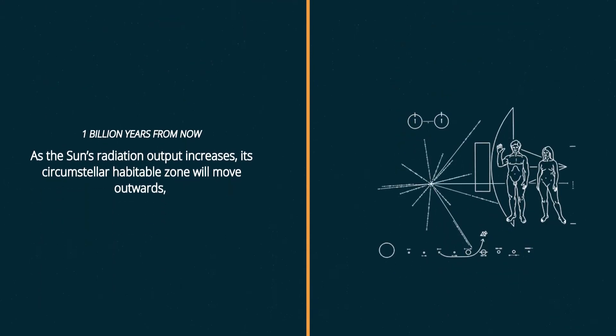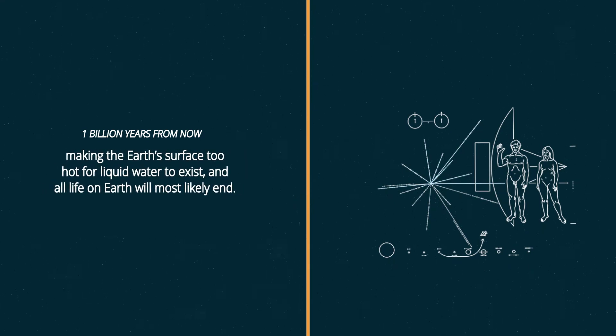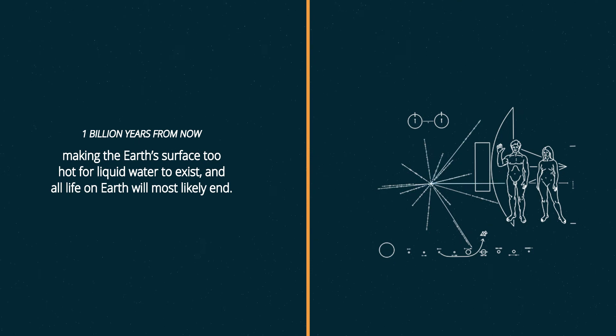One billion years from now, as the Sun's radiation output increases, its circumstellar habitable zone will move outwards, making the Earth's surface too hot for liquid water to exist, and all life on Earth will most likely end.